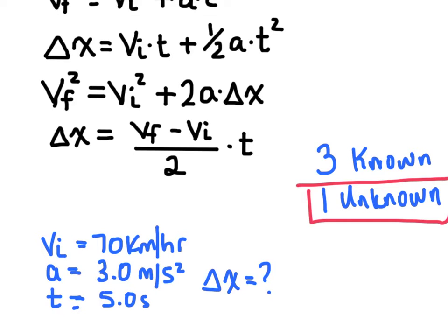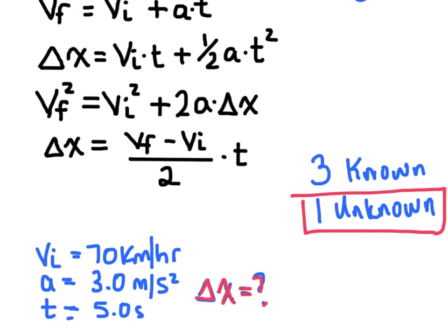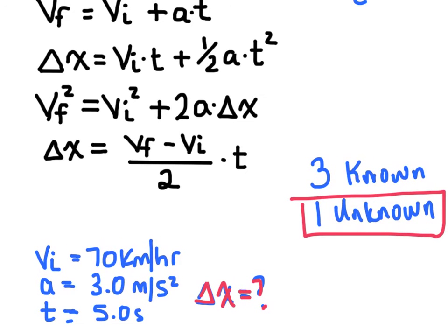And so you could see in this example, I have three known variables, one unknown variable. So what I like to do, and actually let me change the color here of this unknown variable to red, what I like to do is I like to look at all four of my kinematics equations and try to match up by circling my known variables and my unknown variables to see which one's going to work best for me.